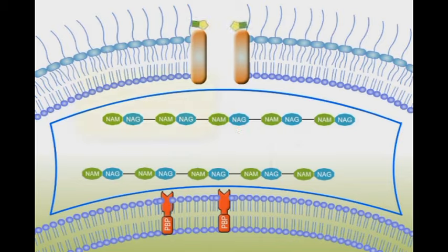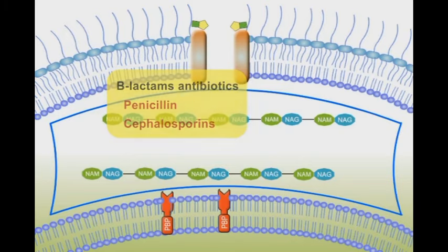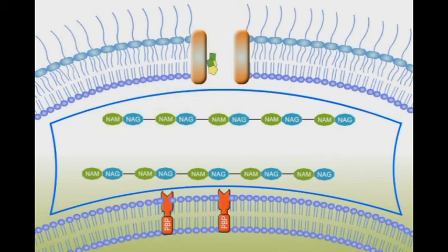To start their bacterial destructive effects, the beta-lactam antibiotics such as penicillin and cephalosporins have to pass through special barrel-shaped proteins known as porins that cross the outer layer of gram-negative bacteria.